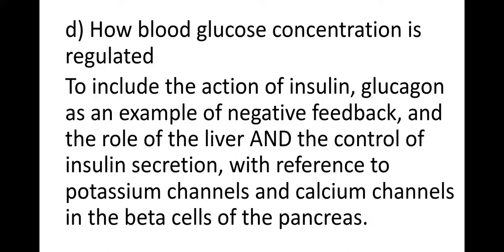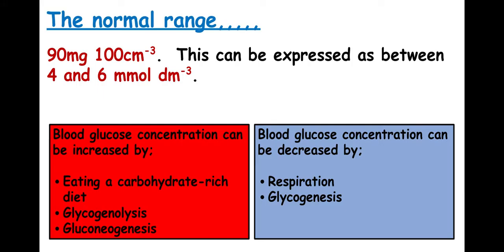Welcome to this session where we're going to take a look at how blood glucose concentration is regulated within the body. The normal ranges are just there on the screen — you do need to know those ranges as they come up on multiple choice questions. Blood glucose concentration can increase when you eat, and it decreases mainly through respiration, because glucose is used up in aerobic respiration.